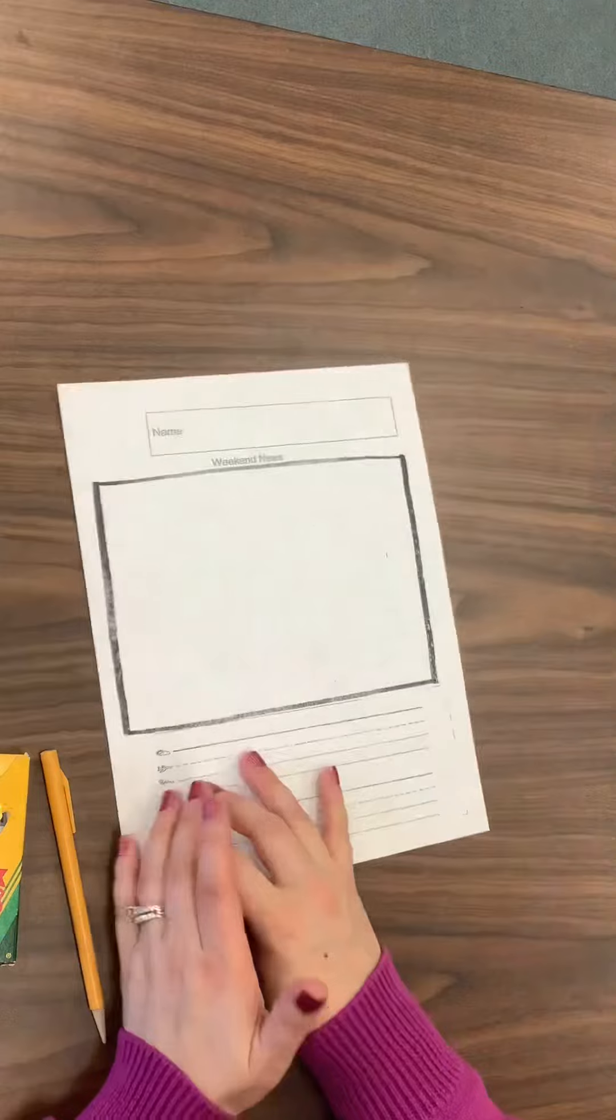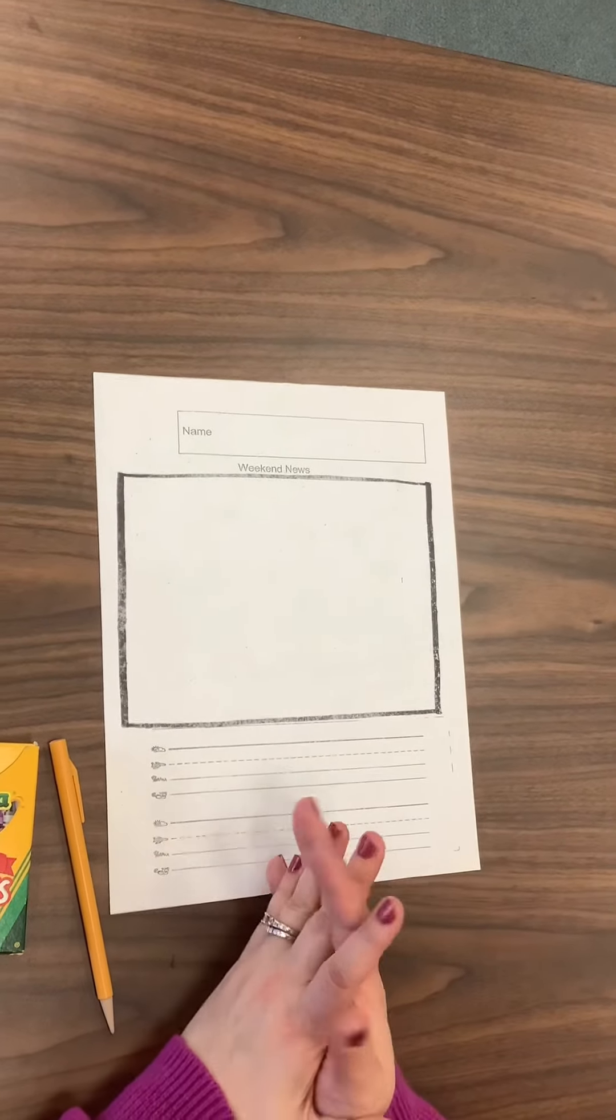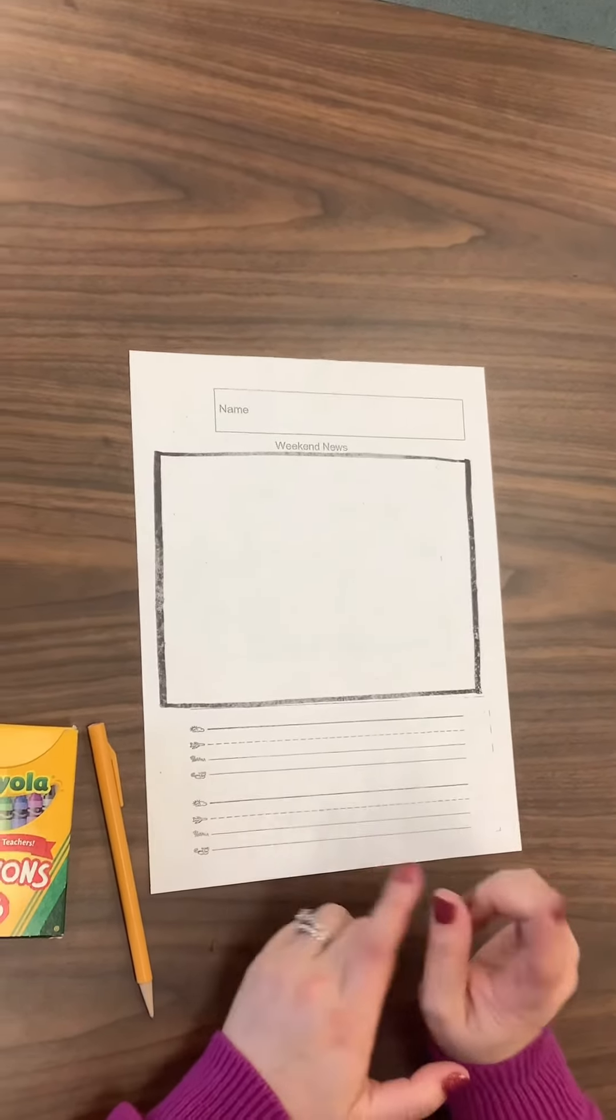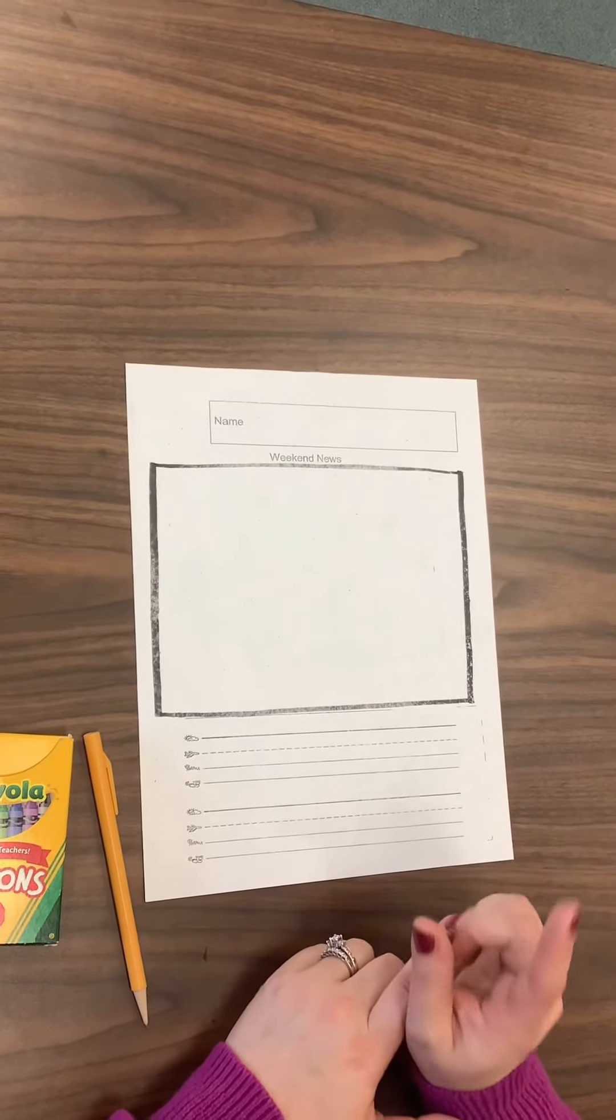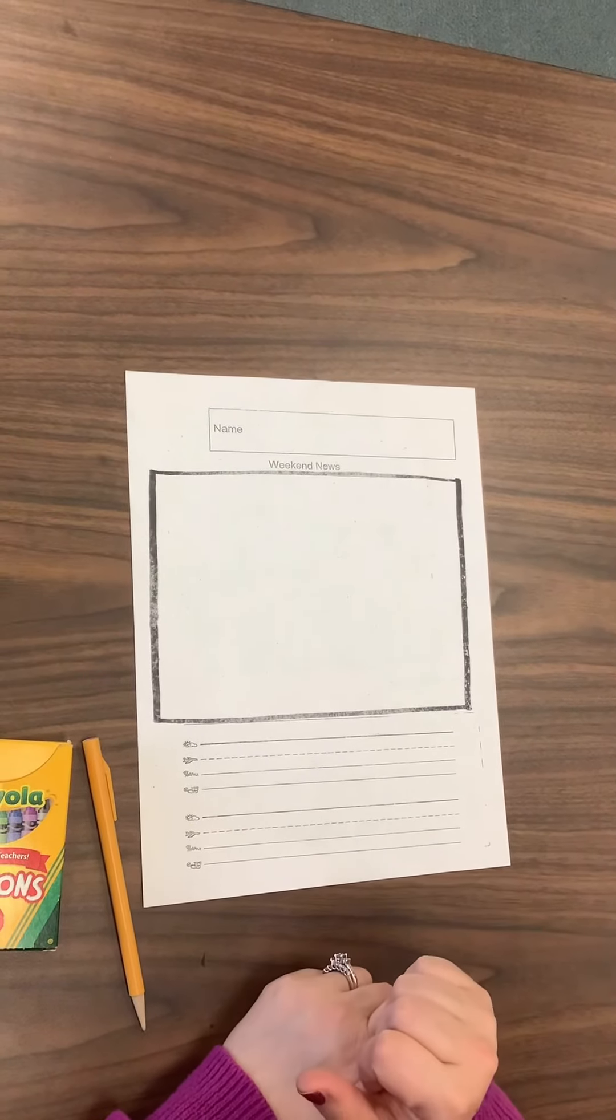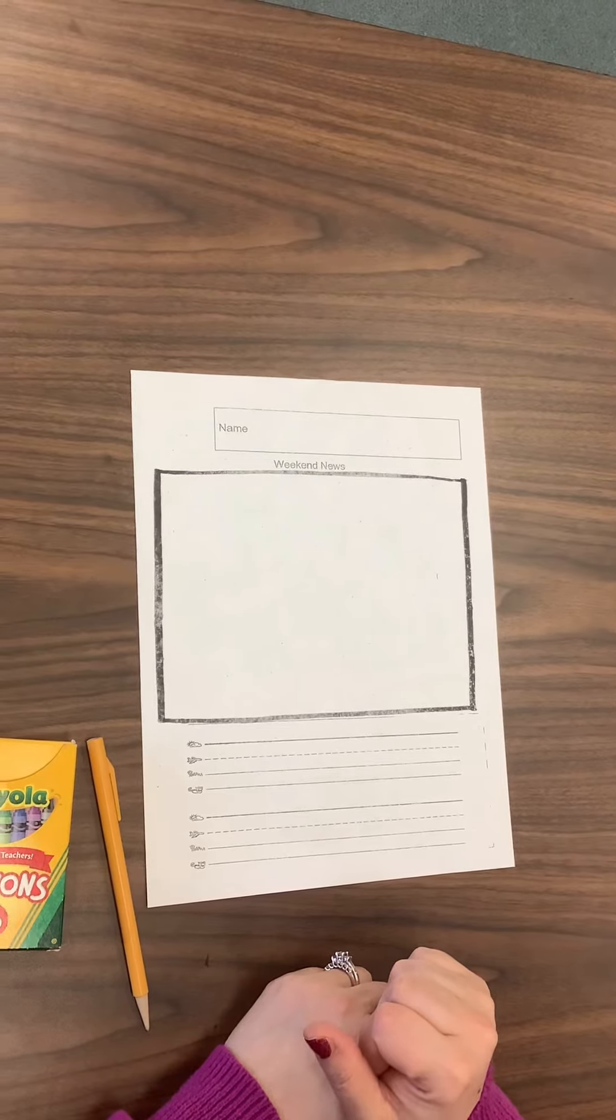So make sure you do your best on your writing, and then take a picture of it, put it into Seesaw, and then you can do the video feature, click on that, and read us your sentence so we know what it was. We can't wait to see your writing!